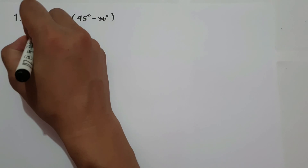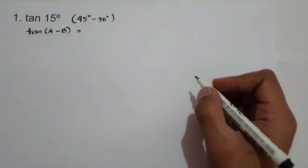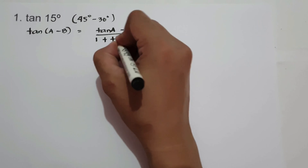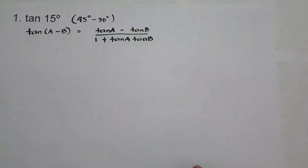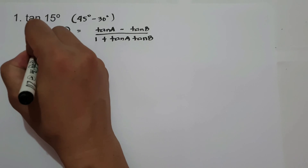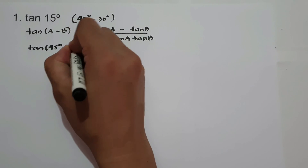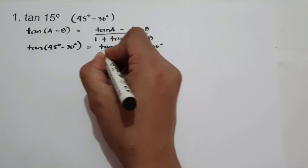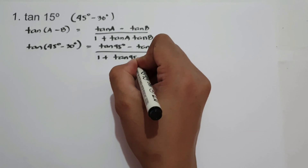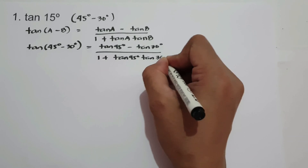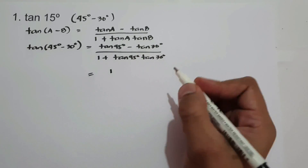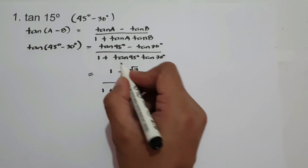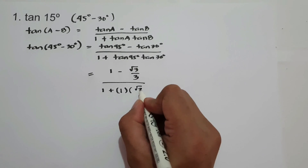Therefore, we are going to use tangent(A-B): (tan A - tan B) / (1 + tan A · tan B). Let's simplify: tan A is tan 45° minus tan B which is tan 30°, all over 1 plus tan 45° times tan 30°. Tangent 45° is 1 and tangent 30° is √3/3.